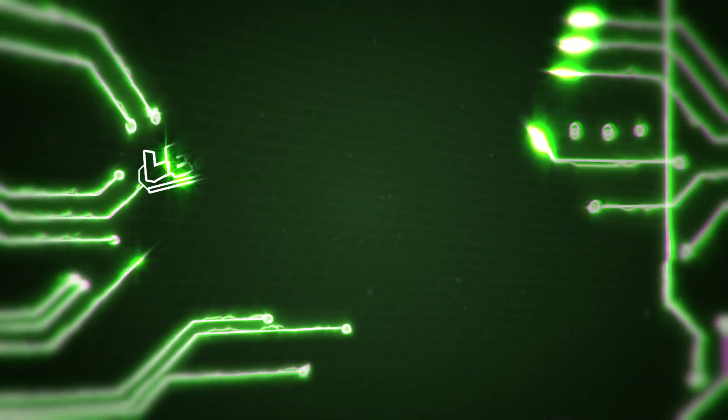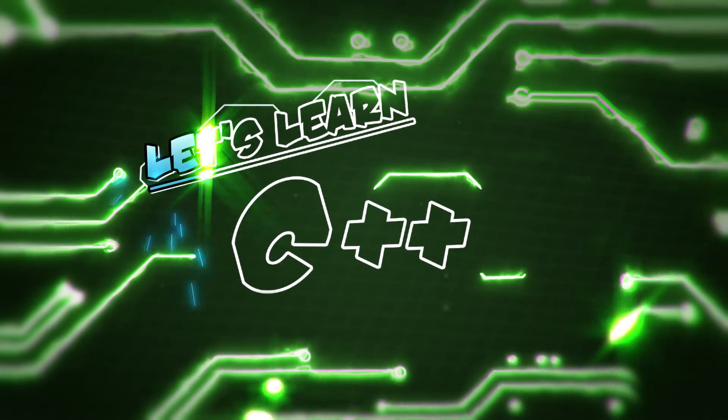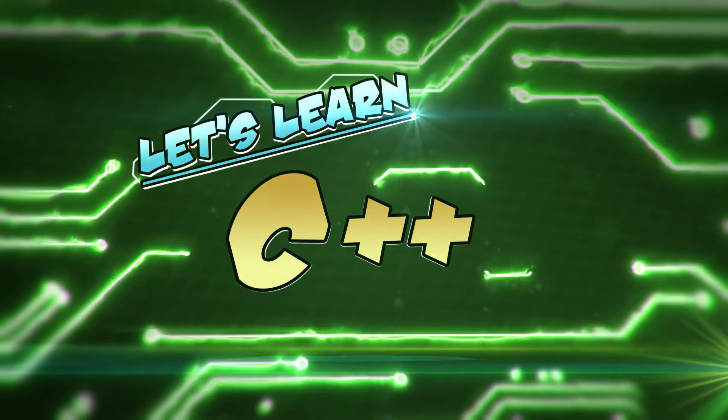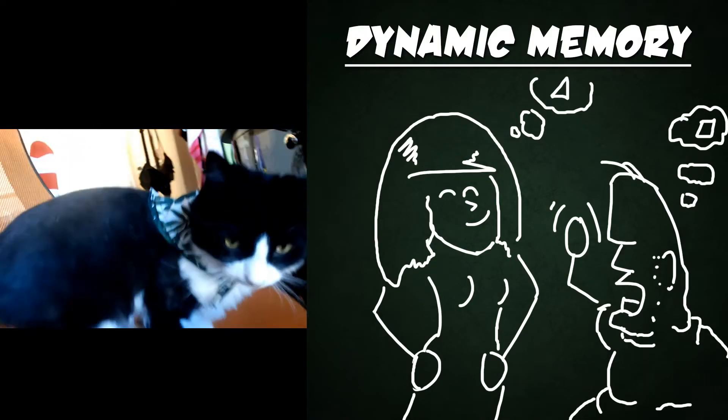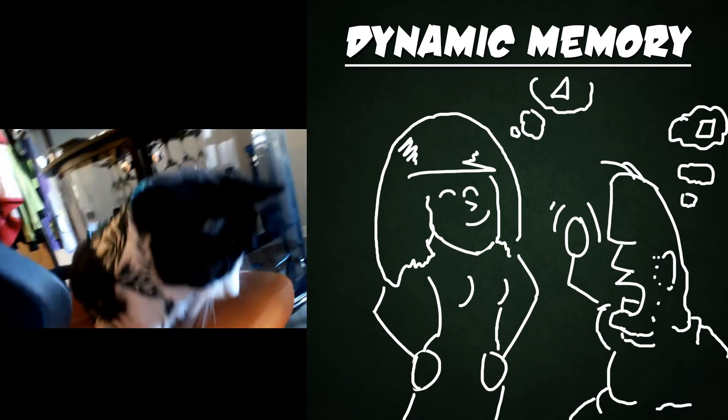I'm T-Pain and welcome to Let's Learn C++. Today's topic is dynamic memory. Dynamic memory is when you remember a different version of something than someone else.